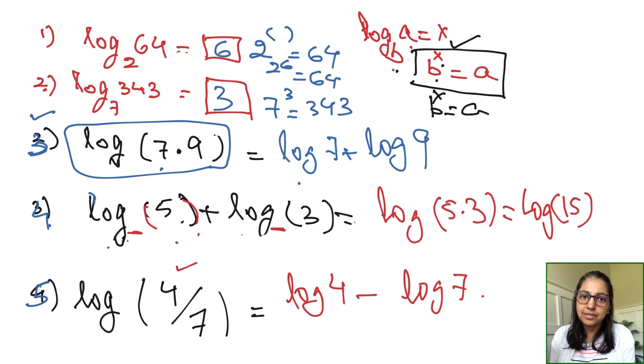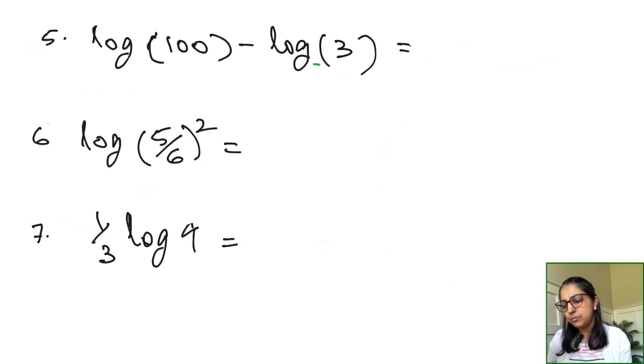Let's see some more examples. Next example here, since there is a minus sign, we can identify the property as a quotient rule, meaning we will have a fraction. Also recognize the base is 10 for both the terms, so this makes it easy. Log(100/3) will be the answer.